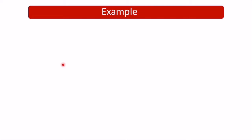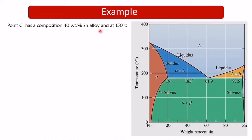Now we're going to take an example with the lever rule. We talked about the lever rule in lecture two, and here we're going to understand how to use it well. The given point C has a composition of 40 weight percent tin alloy at 150 degrees Celsius. We have the lead-tin phase diagram, and we need to locate point C at 40 weight percent tin.